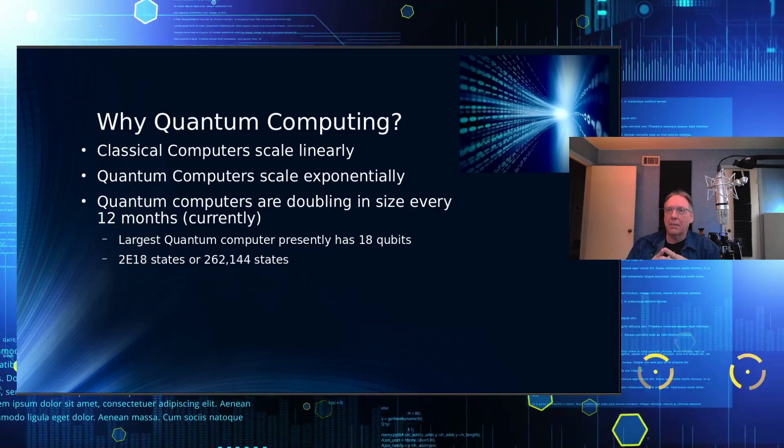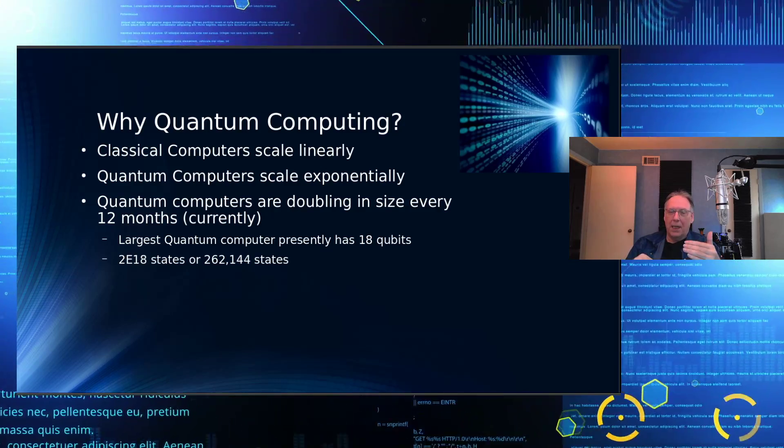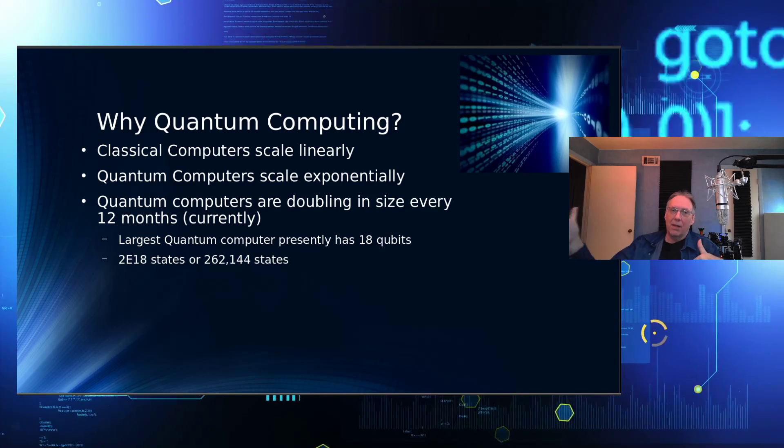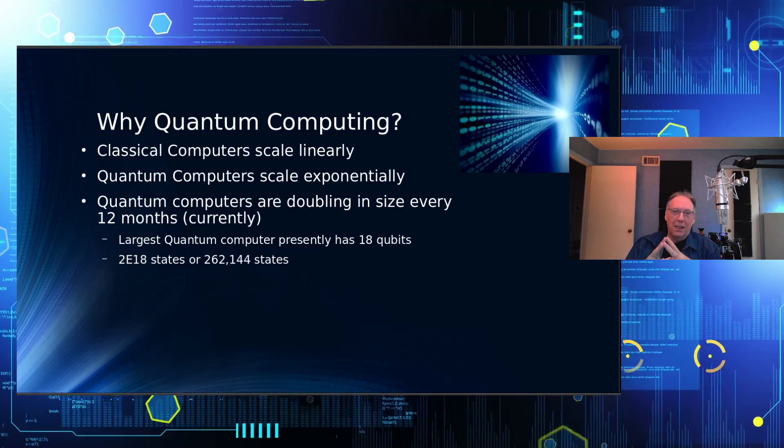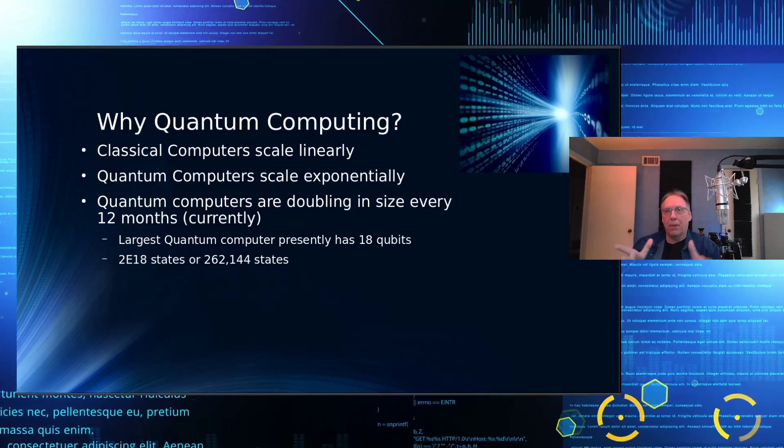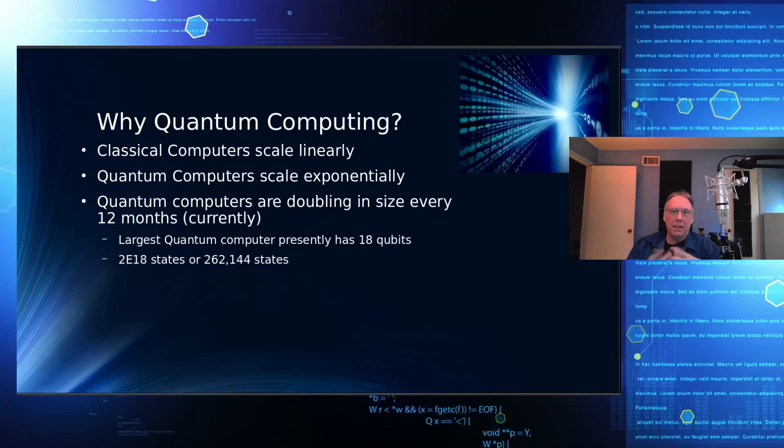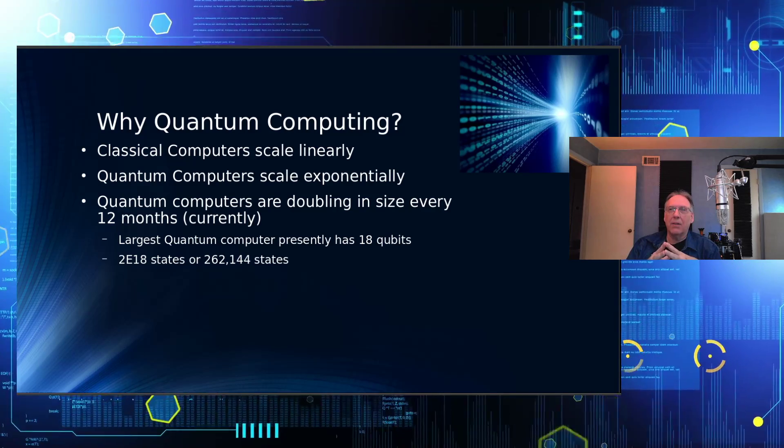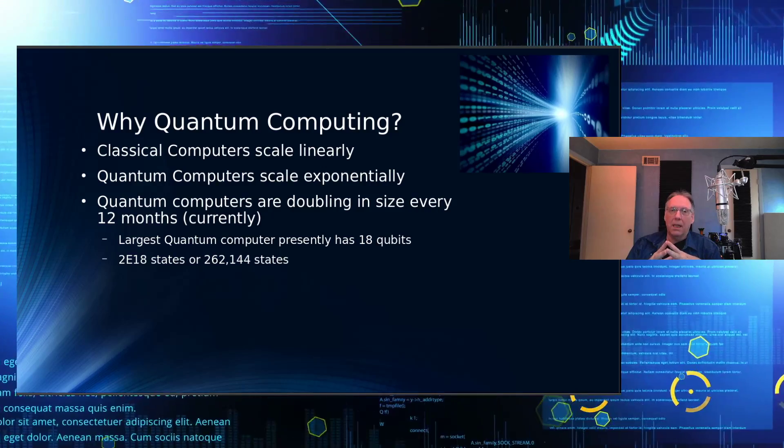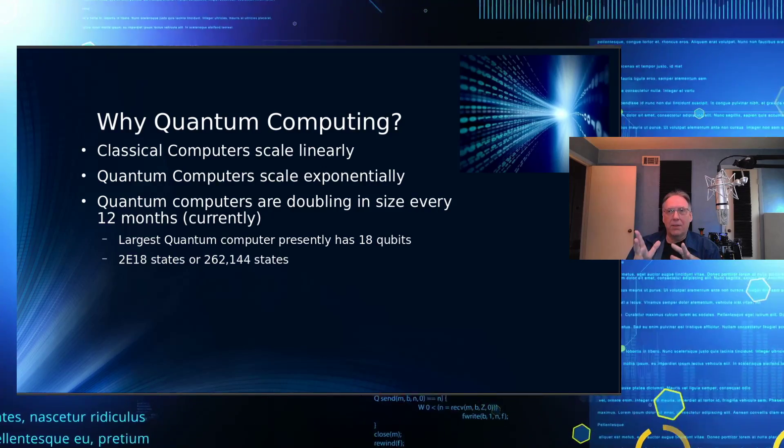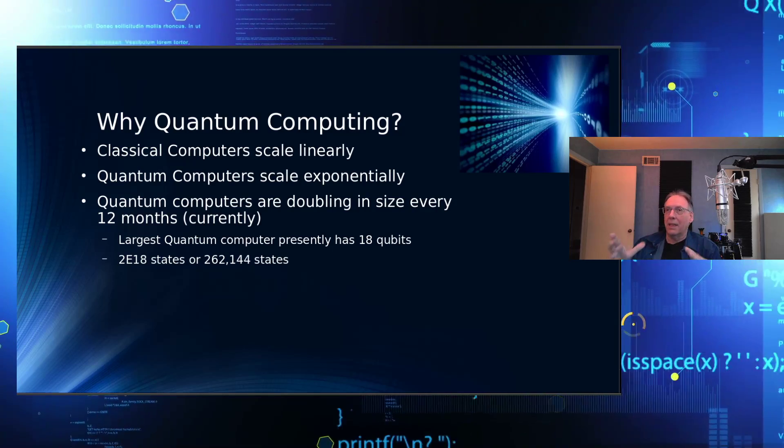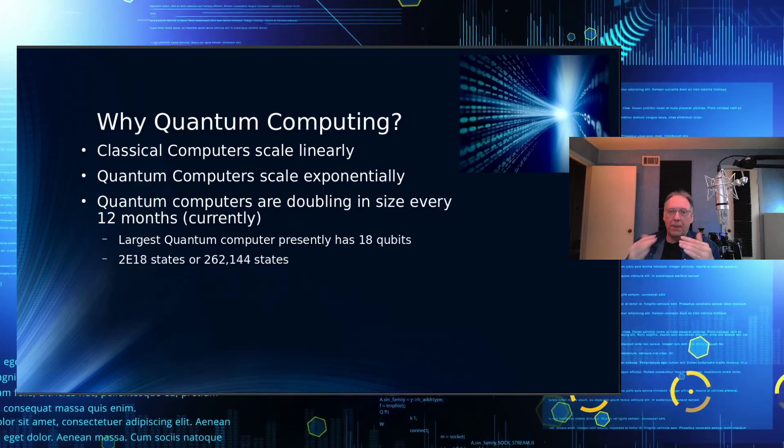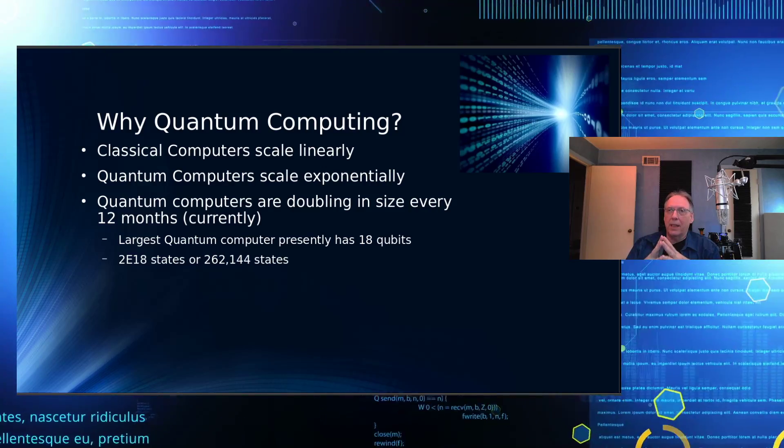Quantum computers scale exponentially. You have 2 to the 16th, 2 to the 32nd, 2 to the 64th, and on up. So the largest quantum computer currently in process of being built is at MIT, and that's 18 qubits. So that has about 262,144 states in that. Now, there's some complications when you get that, when you start getting a lot of bits, you get the error rates go up. So the more qubits you have, the higher the error rate.